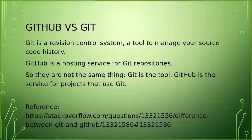Before starting, we will understand what is GitHub versus Git. Git is a version control system — a tool to manage your source code history. If you need version control only for your own system, Git is enough. But if you are working with different team members, then GitHub is the hosting service for Git repositories. In other words, GitHub is built over Git. They are not the same thing — Git is the tool and GitHub is the service for projects that use Git.